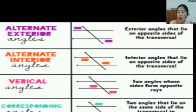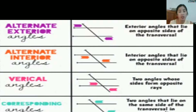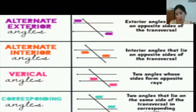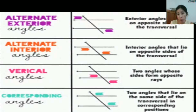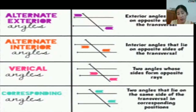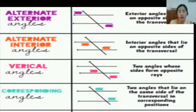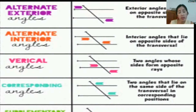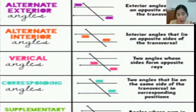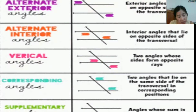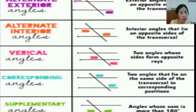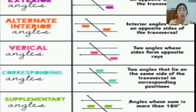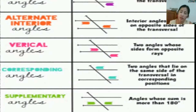Corresponding angles are colored green. They are called corresponding because they are in a relative position at the transversal crossing the parallel lines. One is on the exterior of one parallel line while the other is on the interior. Another corresponding pair will be the angles below the colored green angles. Corresponding angles are congruent.